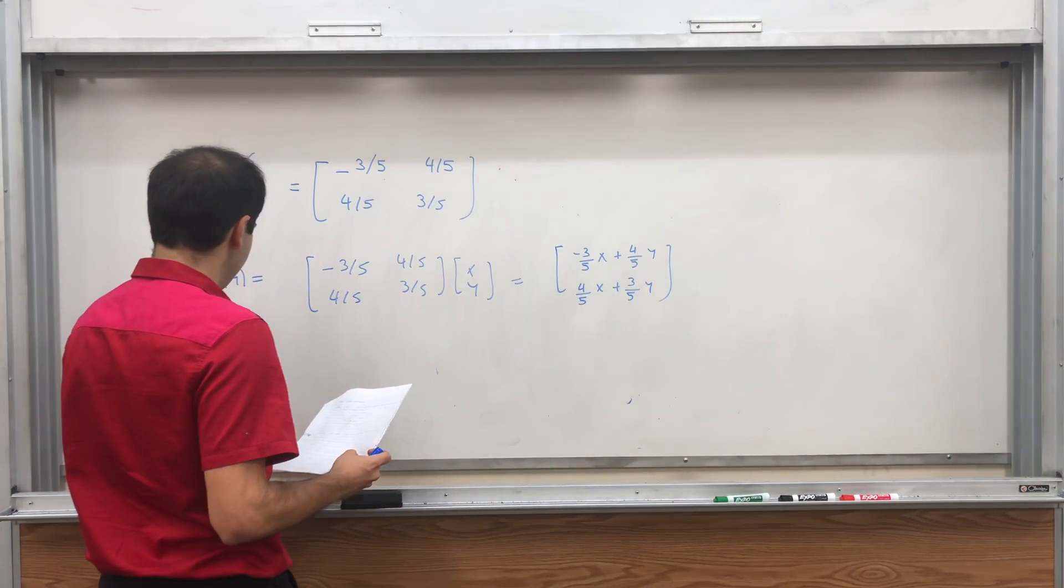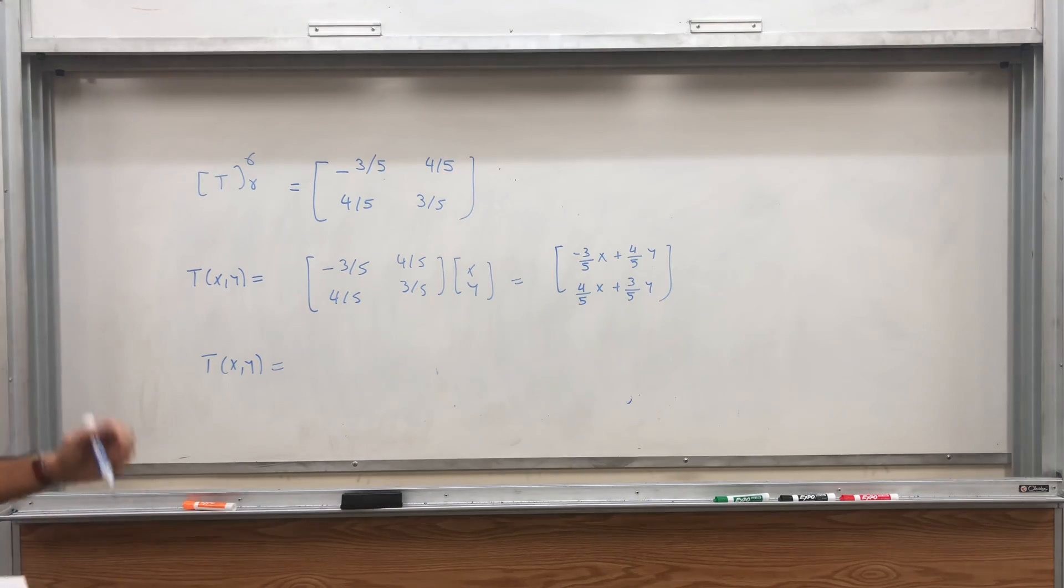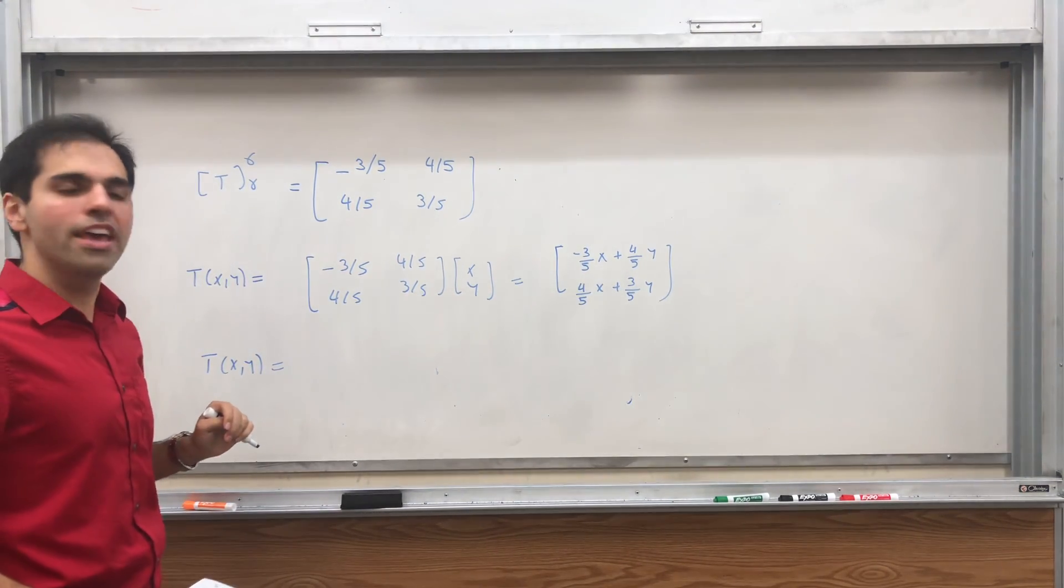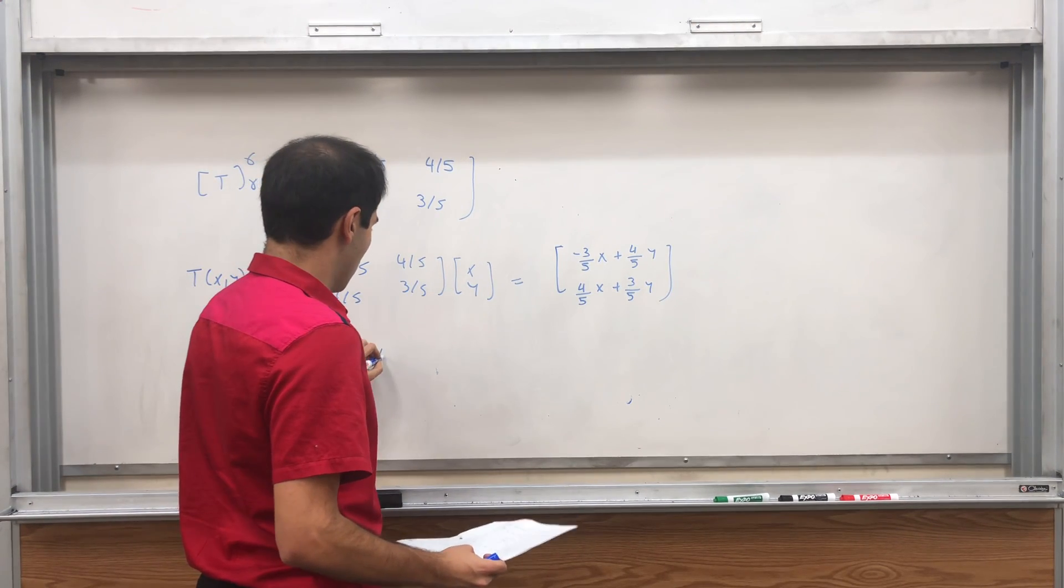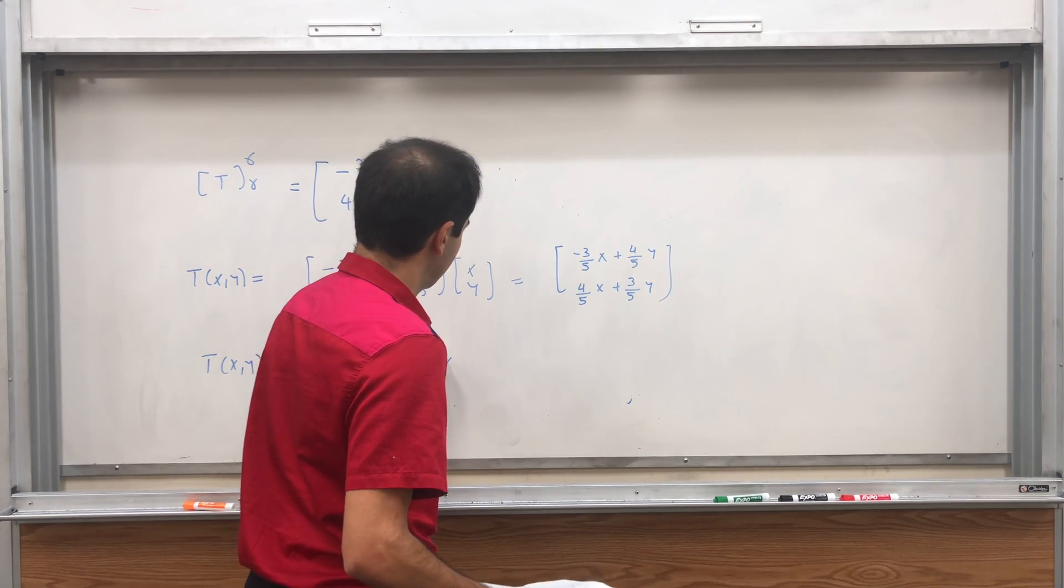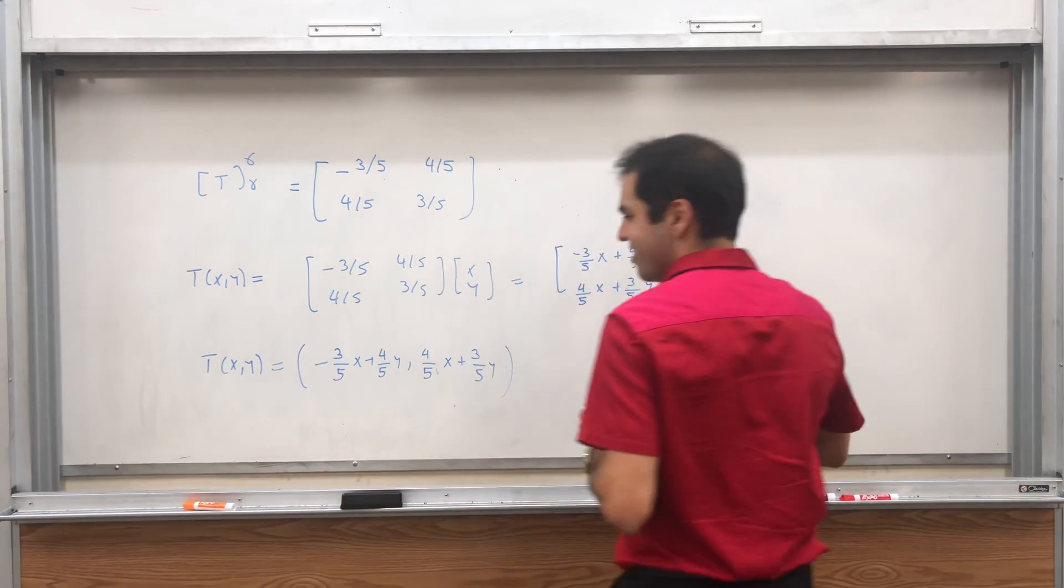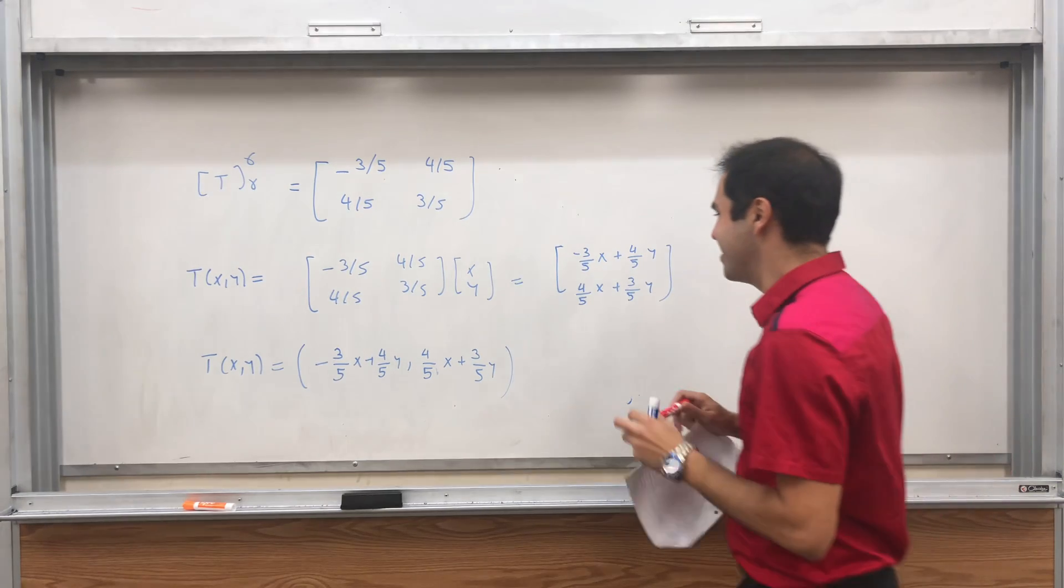So this is what's cool about it. And we get, basically, (-3/5)x + (4/5)y. And then (4/5)x + (3/5)y. What this is telling us, then, the formula of T, you know, the formula of the reflection of points across y equals 2x, is (-3/5)x + (4/5)y, and then (4/5)x + (3/5)y. And yeah. Whoa! How cool is that?